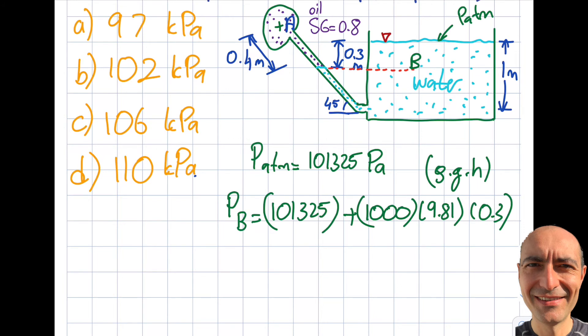One thing before I proceed further is I see some SG 0.8. So let's just convert that to density. I look at the reference manual and I see that SG is equal to density of what I'm dealing with respect to density of water at 4 degrees C, which is 1000 kilogram per meter cube. And this is 0.8. So from here you're going to get rho as 800 kilogram per meter cube.